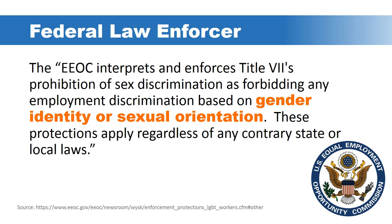Even though the federal law does not expressly cover sexual orientation, the EEOC has taken a position of interpreting and enforcing Title VII's provision on sex discrimination as including gender identity and sexual orientation, regardless of what state or local laws might say. This manifests when an employee files a claim to the EEOC and the EEOC makes its determination through this lens. An employer might challenge that by arguing the federal law does not actually cover it, and then the courts would have to resolve the issue should it go through the legal system.